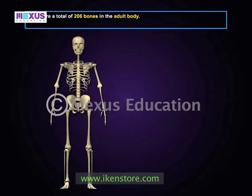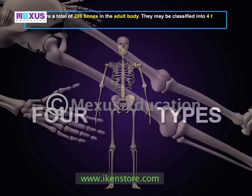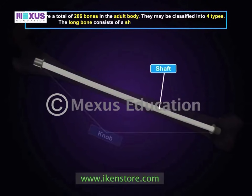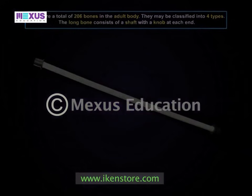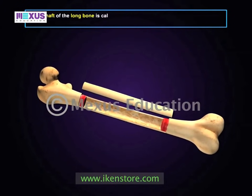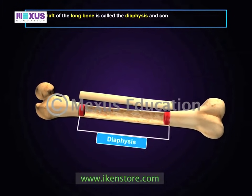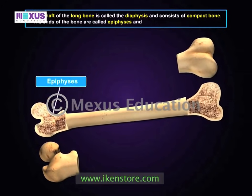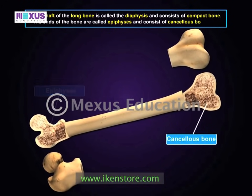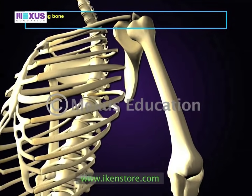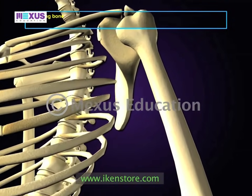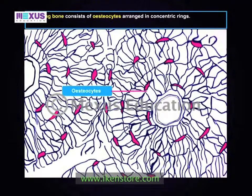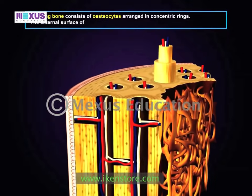The 206 bones may be classified into four types. The long bones, such as the femur, consist of a shaft with a knob at each end. The shaft of the long bone is called the diaphysis and consists of compact bone. The ends of the bone are called epiphyses and consist of cancellous bone. The long bone is highly calcified and consists of bone cells, or osteocytes, arranged in concentric rings.